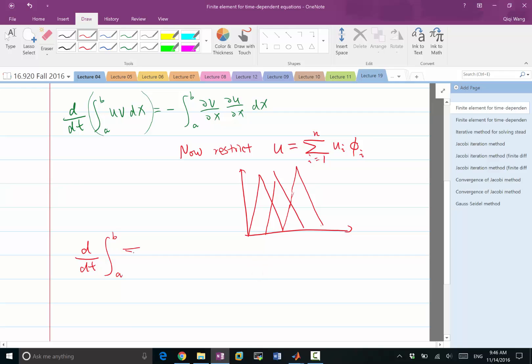So what we have is d/dt of integral a to b, u is now a linear combination, v is now phi_j, dx is equal to minus of now the derivative of v, which is phi_j, and the derivative of u, which is a summation of ui times the derivative of phi_i.